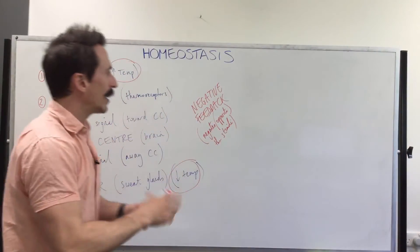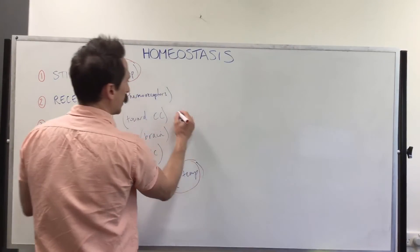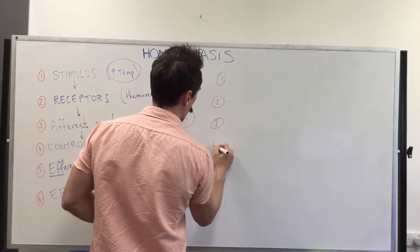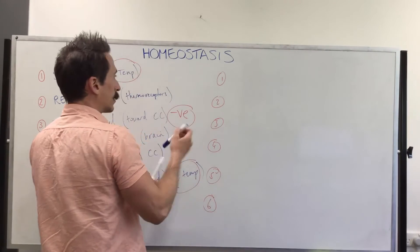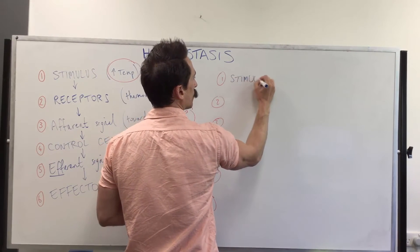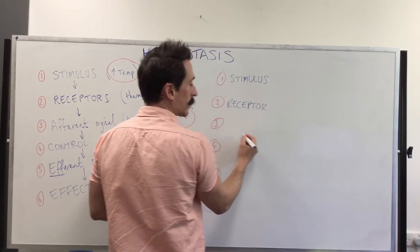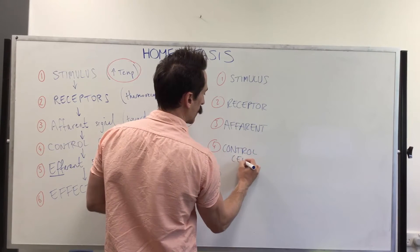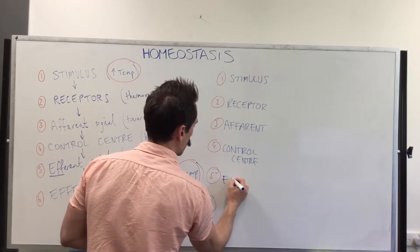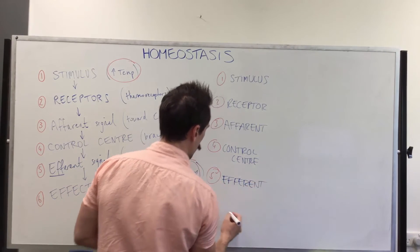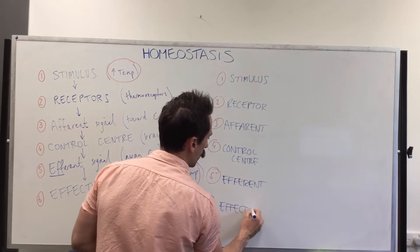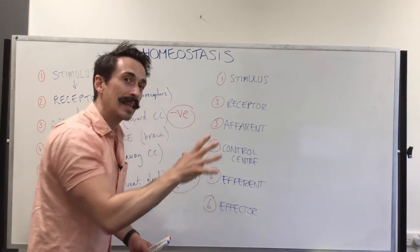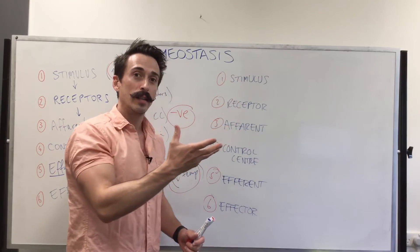Now we need to talk about positive feedback. In positive feedback we've still got the same six steps: we need a stimulus, a receptor, the afferent signal which sends the signal to the control center, which then sends an efferent signal to the effector. It's exactly the same, but in positive feedback the outcome exacerbates or amplifies the stimulus. In negative feedback it negated or did the opposite; in positive feedback it amplifies the stimulus.